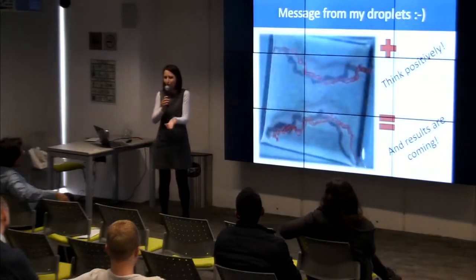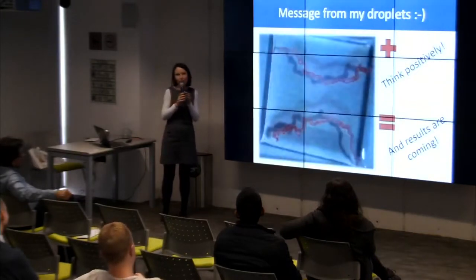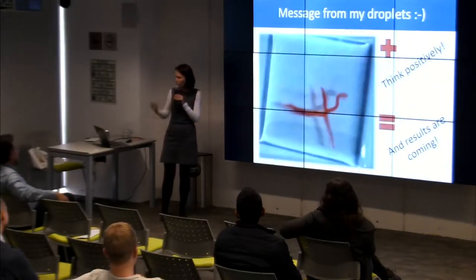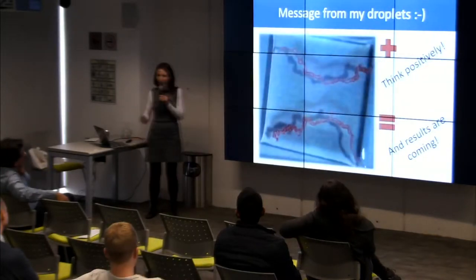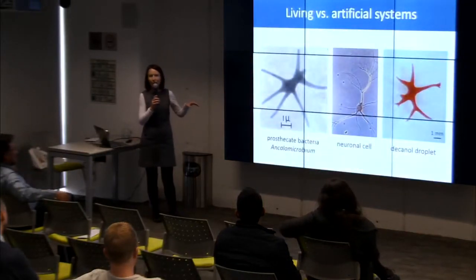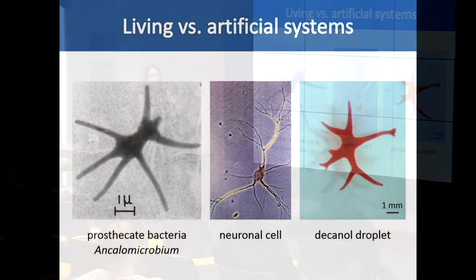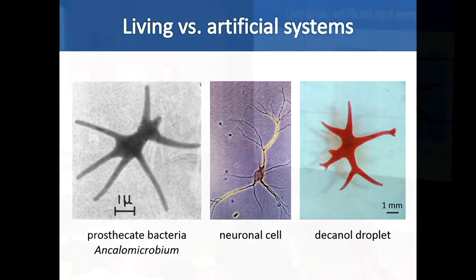We found that it's something new. So I started to do more and more experiments on these droplets. In the context of artificial life, we can observe that living cells are not always rod-shaped or round-shaped — they have various shapes and they branch. The decanol droplets show similar shapes, so from this point of view it is also interesting to study their shape changes.